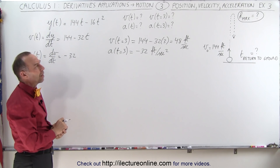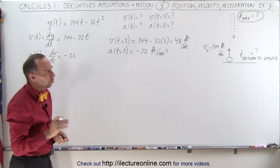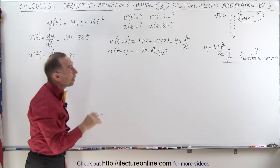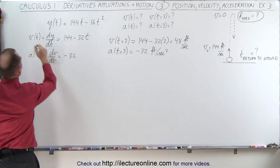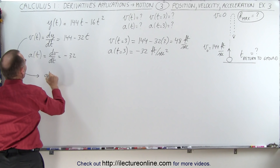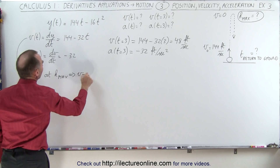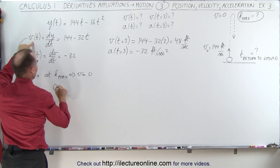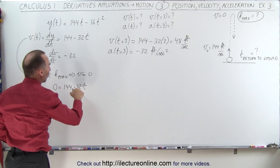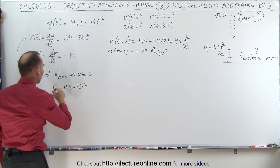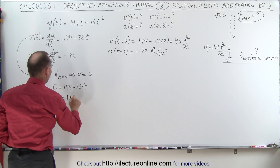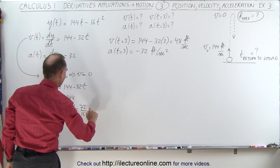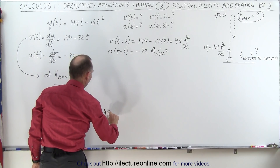Now, how do we figure out the maximum height? We realize that when the object reaches maximum height, the velocity is equal to zero. So we take the velocity equation, set it equal to zero, and solve for t. Zero equals 144 minus 32t, which gives us 32t equals 144, so t equals 144 divided by 32 — that simplifies to 4.5 seconds. In 4.5 seconds, the object reaches maximum height.